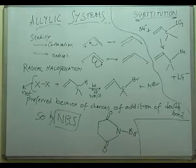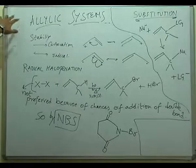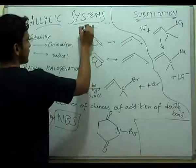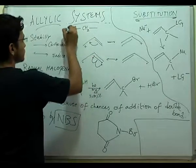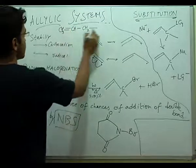Now we will see some different systems like allylic systems and diene systems. We will study systems which are different from hydrocarbons - the allylic system. An allylic system is something attached to the carbon next to the double bond. This is called an allylic system.